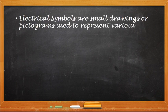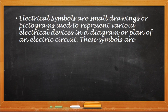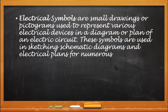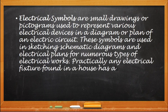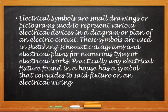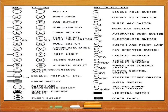Then we have electrical symbols. These are small drawings or pictograms used to represent various electrical devices in a diagram or plan of an electric circuit. The symbols are used in sketching, schematic diagrams, and electrical plans for numerous types of electrical works. Practically any electrical fixture found in a house or building has a symbol that coincides with the same fixture on an electrical wiring diagram. Here are the common electrical symbols used in power and lighting layouts.